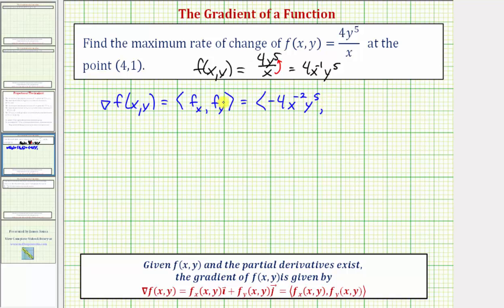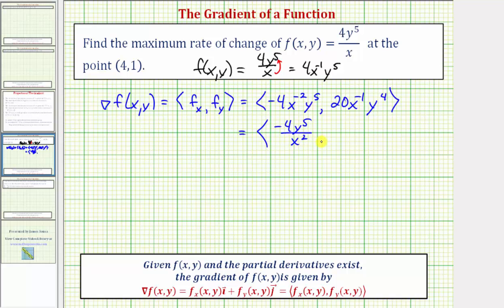To find the partial with respect to y, we differentiate with respect to y treating x as a constant. We multiply by five, giving 20x⁻¹, then subtract one from the exponent on y, which gives y⁴. We can also express the gradient with an x-component of −4y⁵/x² and a y-component of 20y⁴/x.